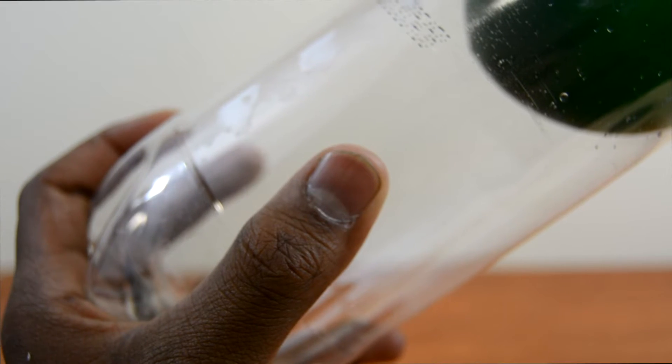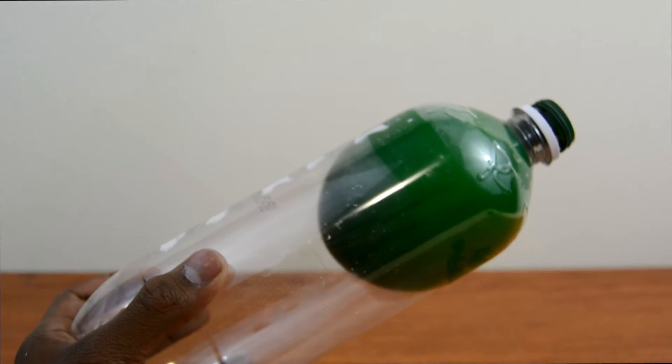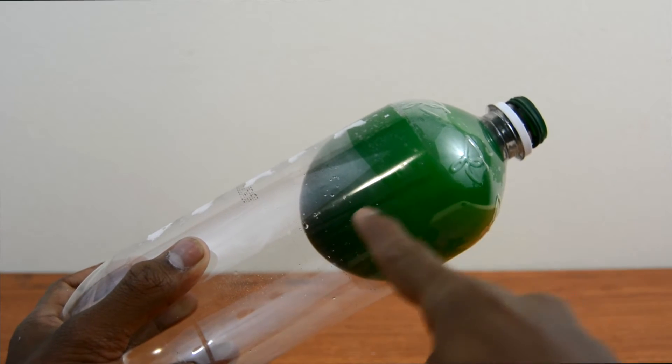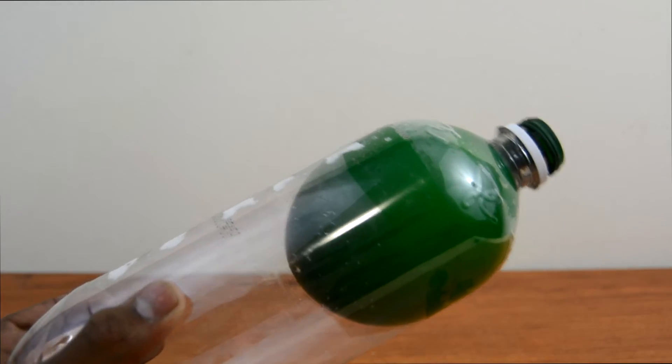So once you're done blowing up the balloon, you go ahead and use your thumb to cover the hole and this will make sure that the air doesn't run out of the balloon and it looks like the air is still inside the balloon while it's not tied off.